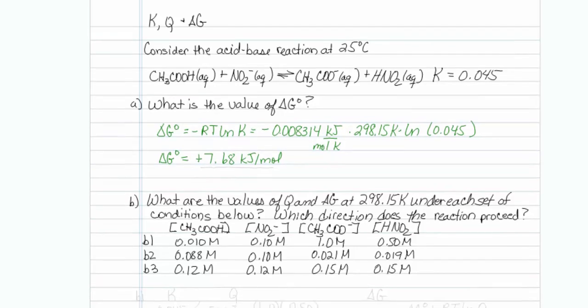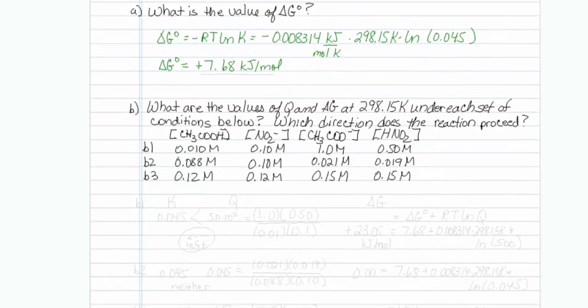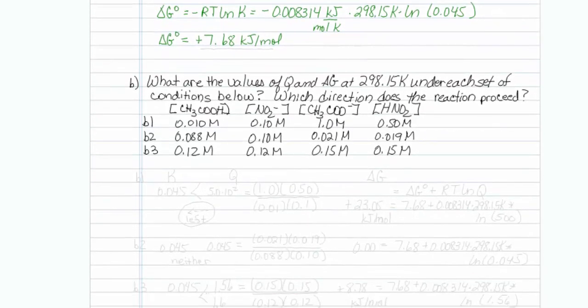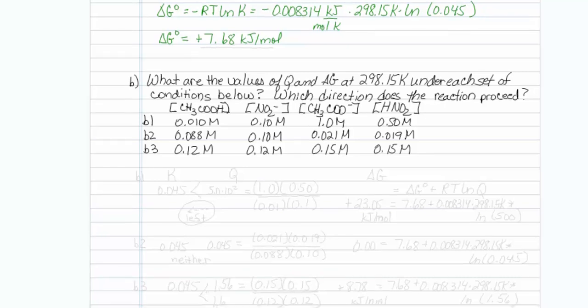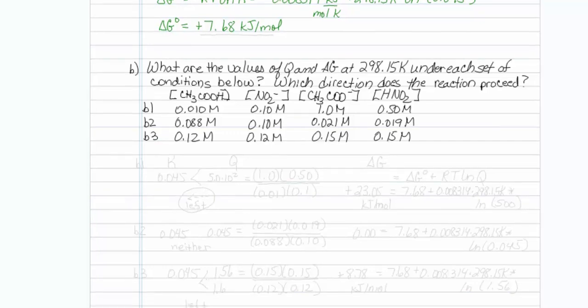Now we're asked if we're under a specific set of conditions, what are the values of Q and free energy at room temperature under each set of conditions? I will write down the value of K for each set of conditions for easy comparison. Let's look at the first one. K does not change at this temperature, it's 0.045.